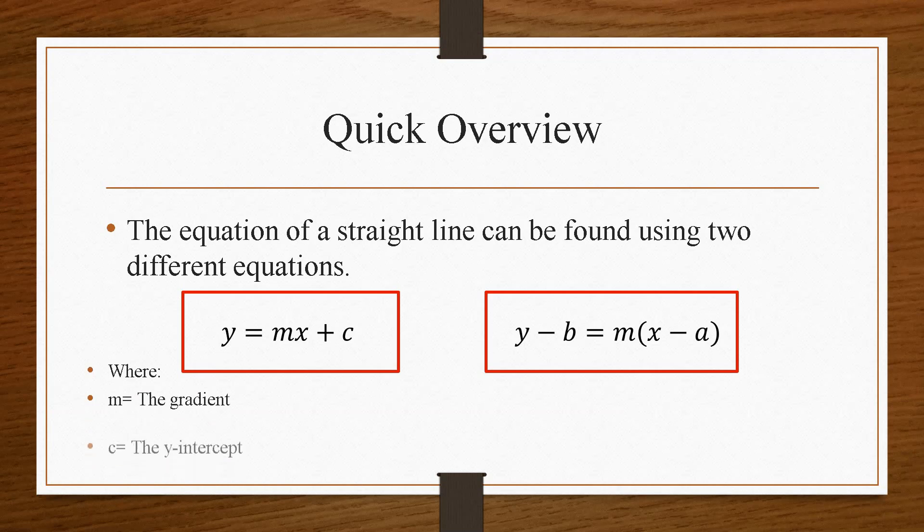Whereby m represents the gradient, c is the y-intercept which only applies to this equation, and a and b are a single coordinate that lies on the line, and this applies to this equation.